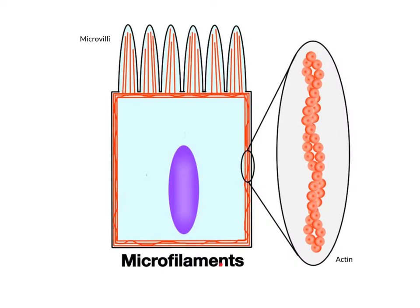Microfilaments are the structures of the cytoskeleton that have the smallest diameter. They're thread-like but incredibly strong, similar to fishing line that is thin but strong enough to support hundreds or thousands of pounds of pressure. Microfilaments are made primarily of the protein actin. Actin fibers are predominant in muscle tissue. Movement is a major function of microfilaments, allowing muscle cells to contract to pull against bone, to make changes in organ volume, or to assist in the transport of fluids and digestive materials in the GI and urinary tracts.